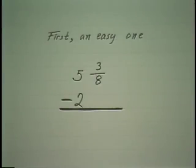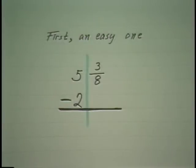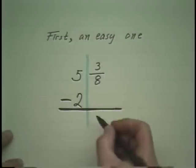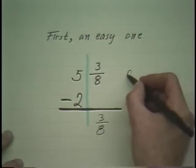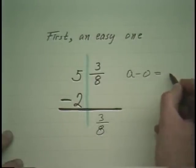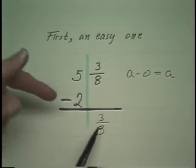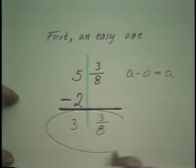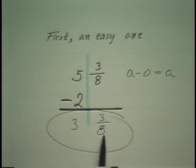Now let's look at two special but simple cases where one of the fractions is missing. In this case it is very simple — there is nothing here, it is zero. Zero always subtracts from anything. Using algebraic terminology, anything minus zero is itself. So 3 eighths subtract zero is still 3 eighths. Then subtract the whole numbers and you are done. Just remember, if you don't have a fraction you have in effect zero, and zero from anything is itself.